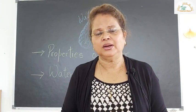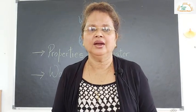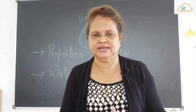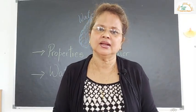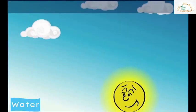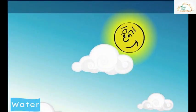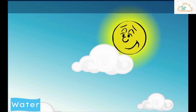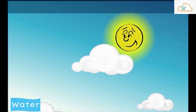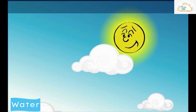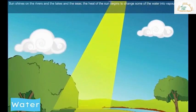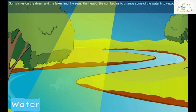Children, have you all wondered how we get rain and what causes rain? So let us learn the two processes: evaporation and condensation. Have you wondered how we get rain and how the rivers seem to always flow and how the ocean has so much water? The sun shines on the rivers and the lakes and the seas. The heat of the sun begins to change some of the water into vapor. This is called evaporation.